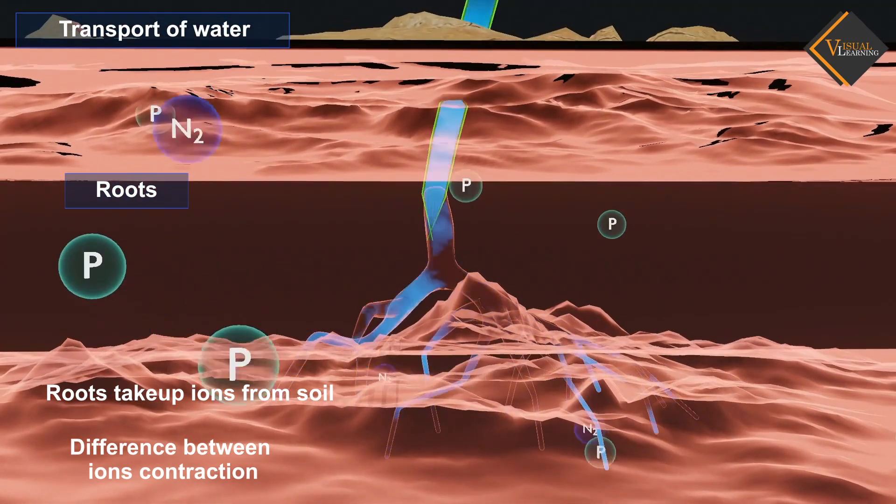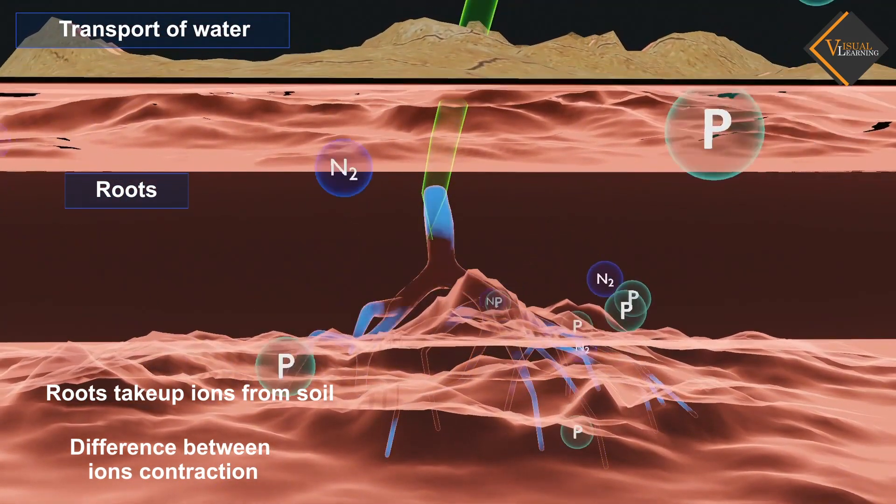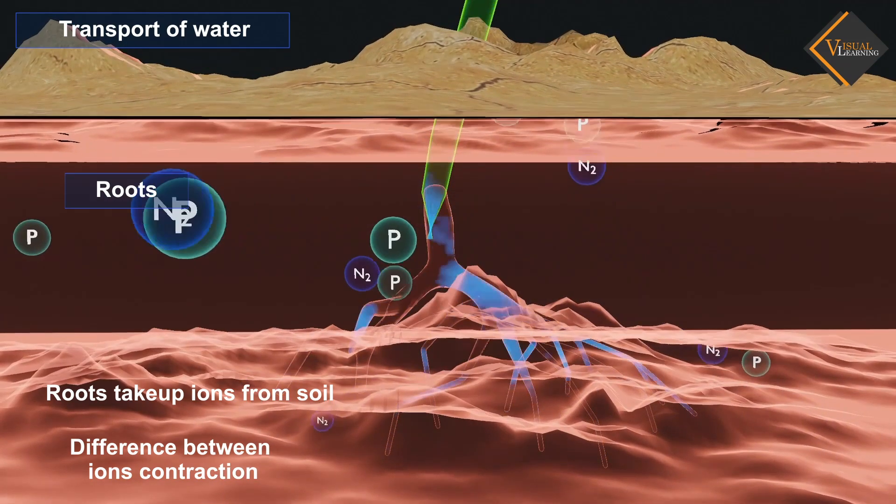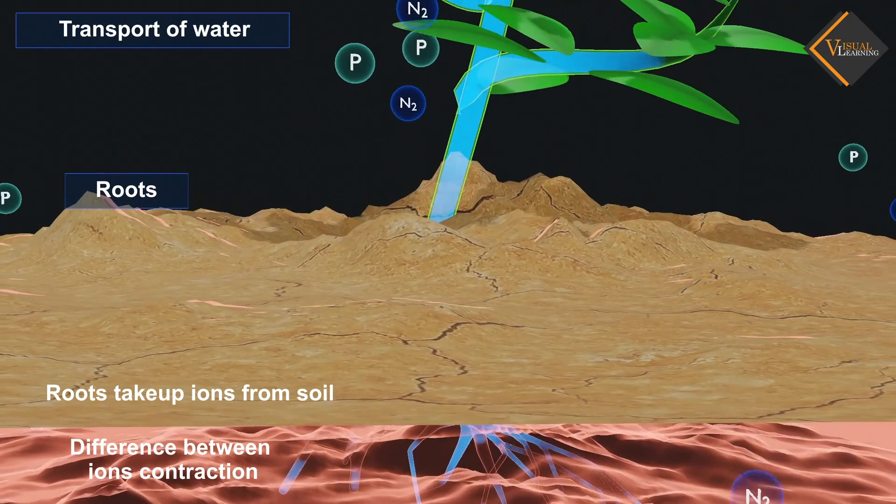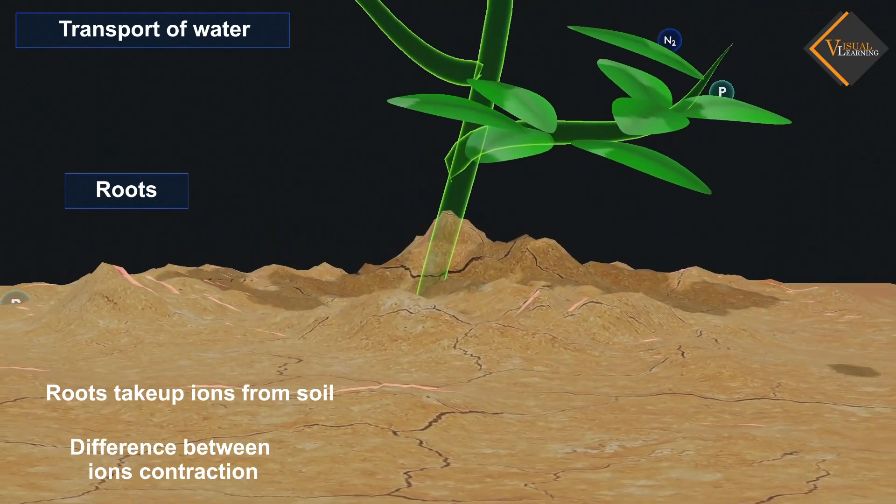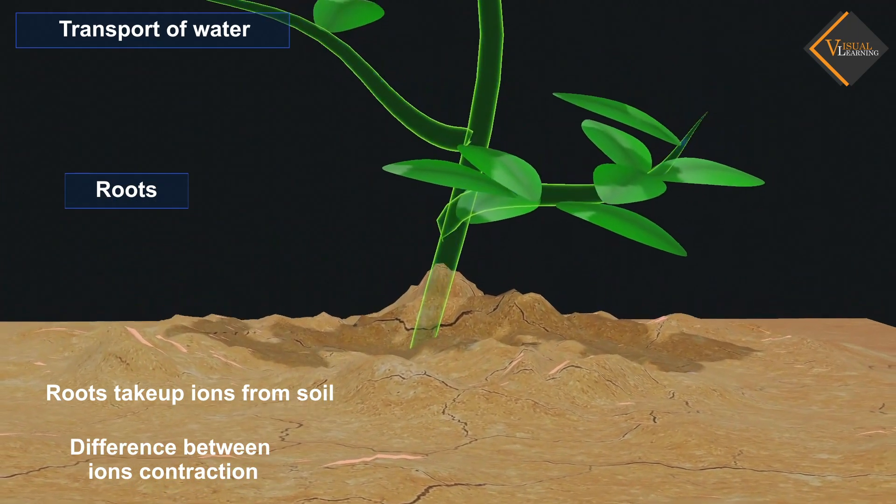Water therefore moves into the root from the soil to eliminate this difference. This means that there is steady movement of water into root xylem, creating a column of water that is steadily pushed upwards.